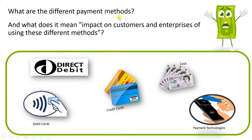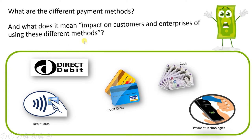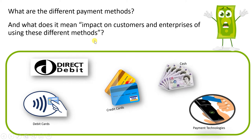The different payment methods we'll cover include: debit cards, where you tap your card and money is taken from your account straight away; credit cards, where you tap and get the bill at the end of the month; cash; payment technologies like Apple Pay and Android Pay; and direct debit, which you set up for regular bill payments so money is taken automatically from your account. We'll look at the impact of each on customers and enterprises.